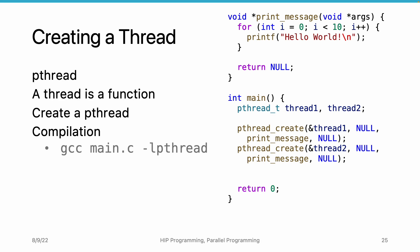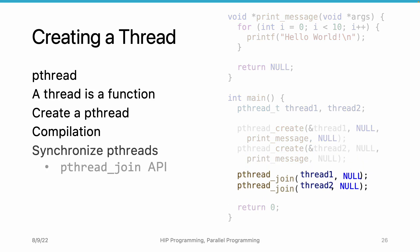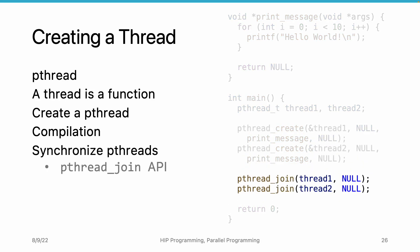To wait for the threads to finish execution, we can use the pthread_join API. It takes two arguments. The first one is the thread we are waiting for, and the second one accepts the return value of the pthread. Here, we do not accept any values from the thread, so we pass null to the pthread_join function. In this example, we call pthread_join twice to wait for both threads to complete execution — first waiting for thread1, then thread2.